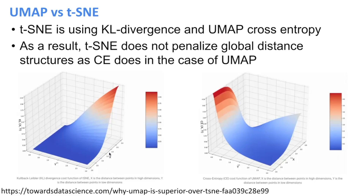In the case of T-SNE, let's say we have two genes and they're really close to each other — so let's say they have a distance close to zero — but their distance is really high in the low dimensional space. Then in this function we're all the way up here, and so this is the cost, this is the penalty. This algorithm really doesn't like that, and so it will then try to push the points away in its layout.